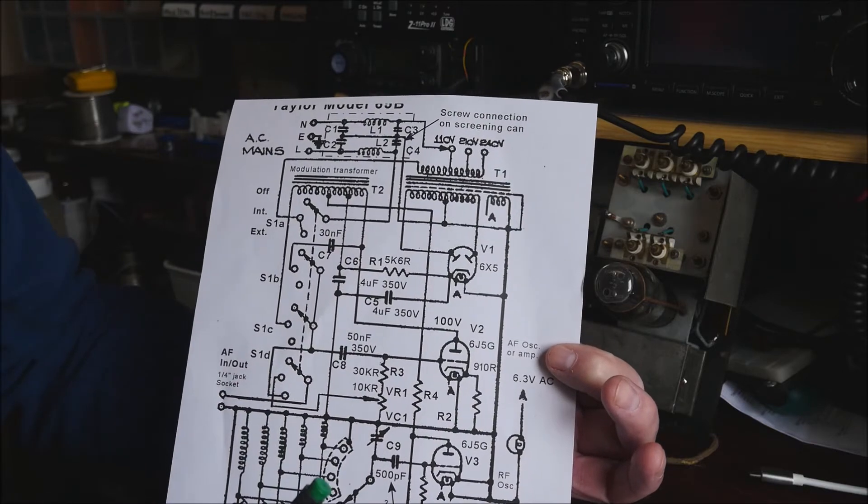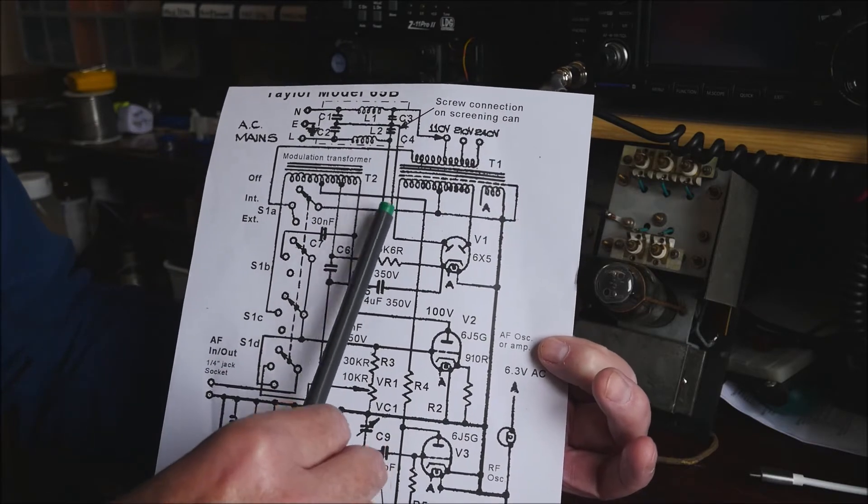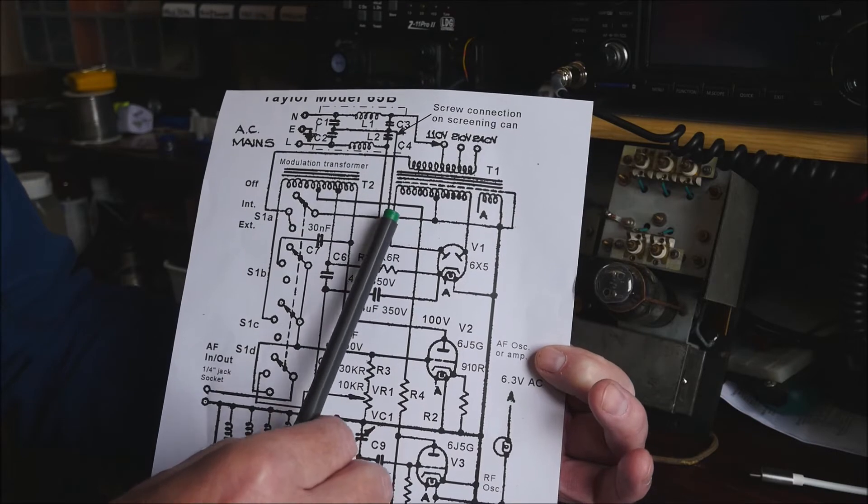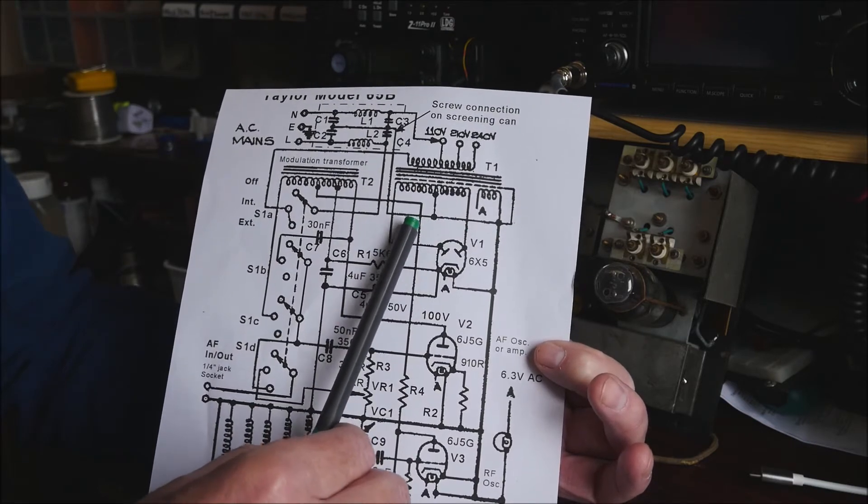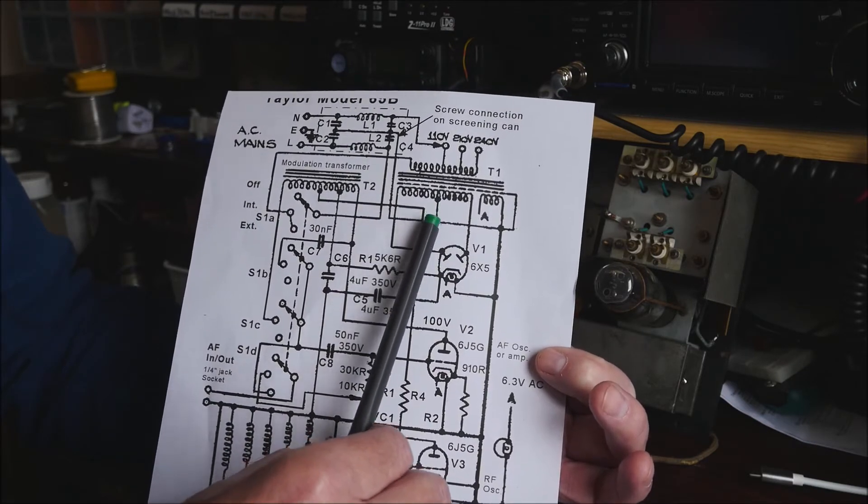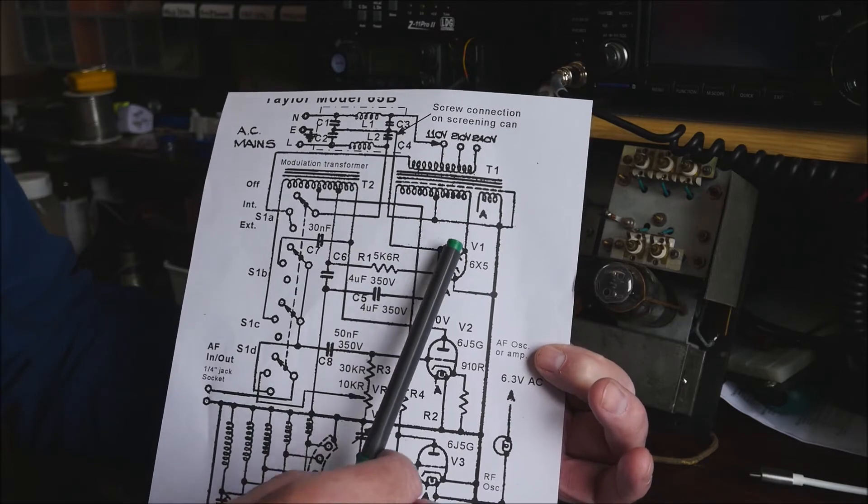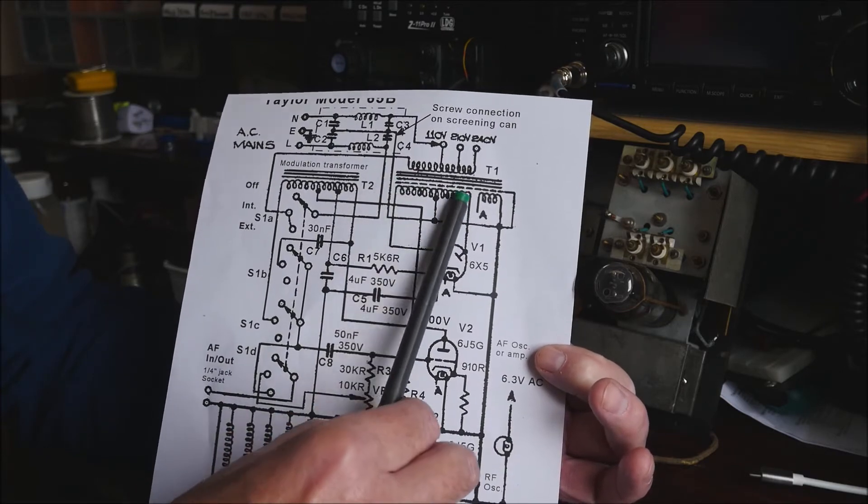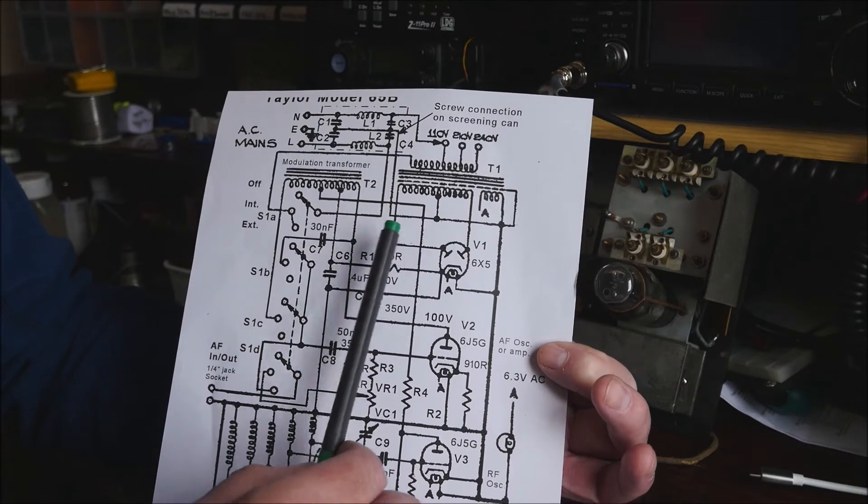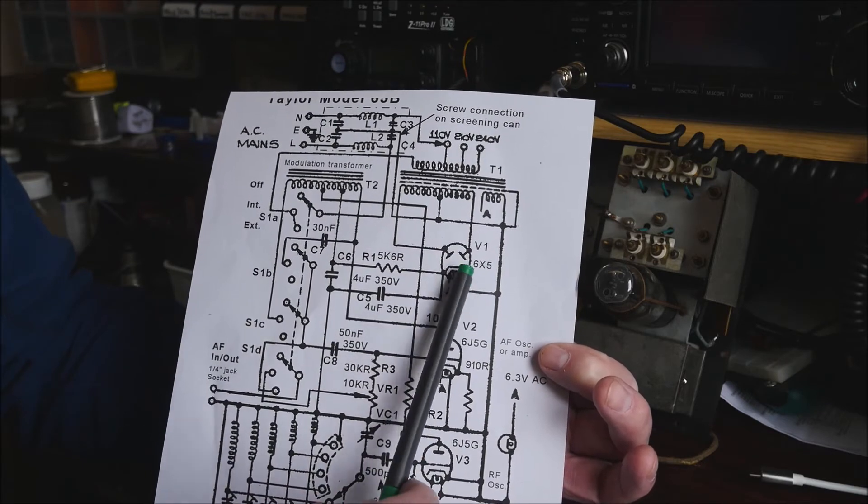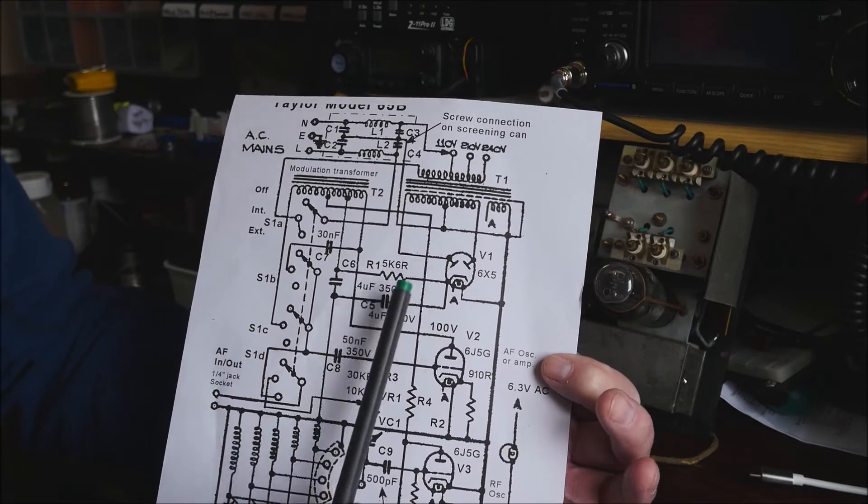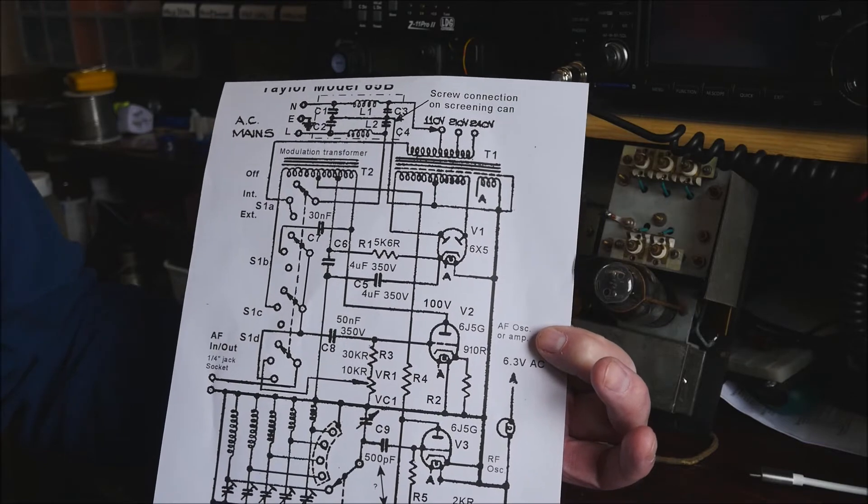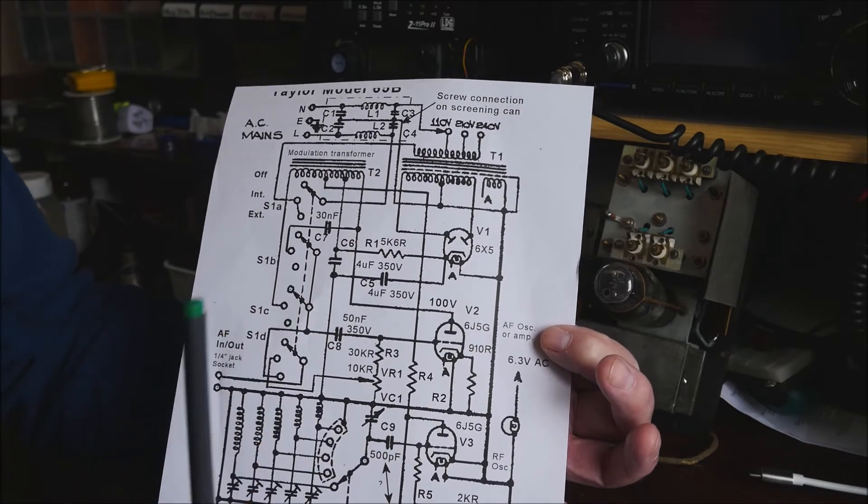The other secondary on this transformer, center tap there, again the center tap goes to ground and it's actually this is the high voltage supply. So as you can see, both ends of that go to the two anodes in the 6X5 set for full wave rectification mode.